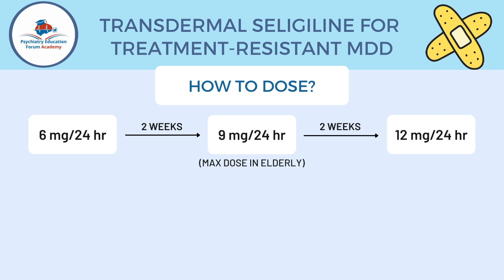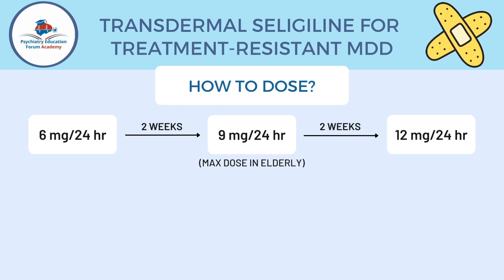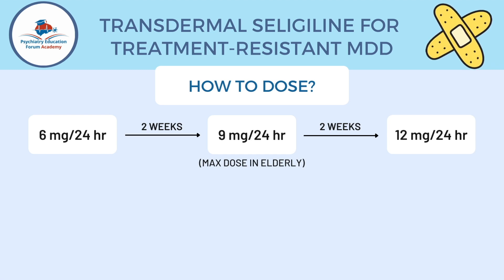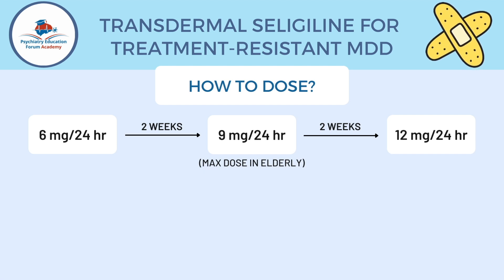Although not mentioned on the slide, for liver and kidney impairment, no dosage adjustment is needed. More specifically for liver impairment — for mild and moderate — no dosage adjustment is needed, but there were no studies or data for severe liver impairment. For renal impairment, for mild, moderate, or severe, no dosage adjustment is needed. In elderly, 9 milligrams is ideally the highest dose, but most people target 6 milligrams in elderly patients.